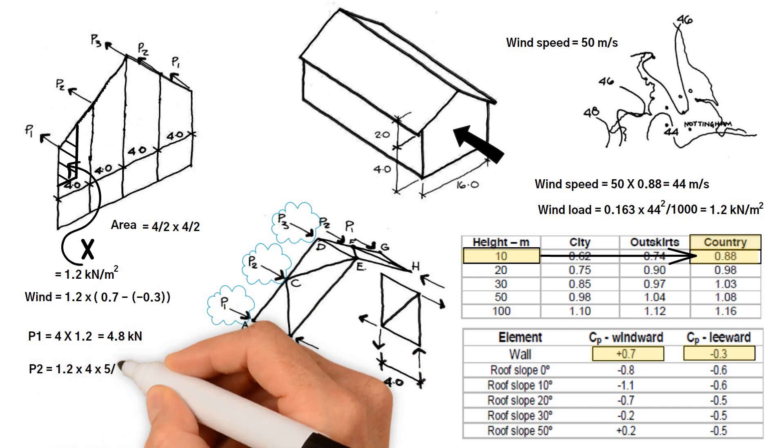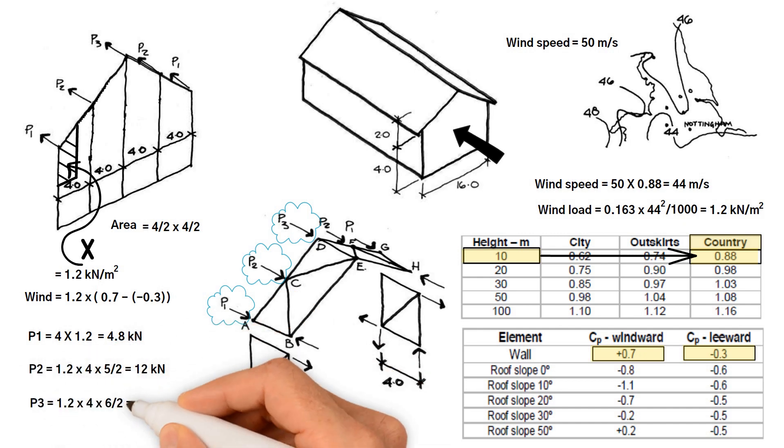Similarly, P2 and P3 forces are obtained from the area multiplied by the wind pressure. P2 equals 12 kilonewtons. P3 equals 14.4 kilonewtons.